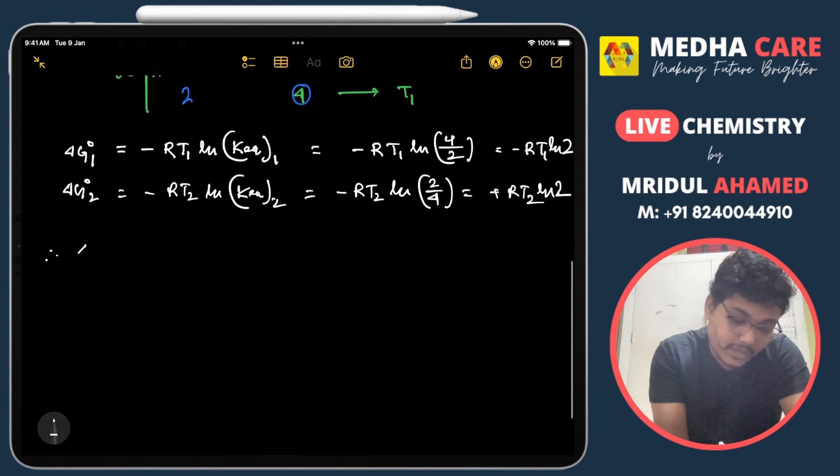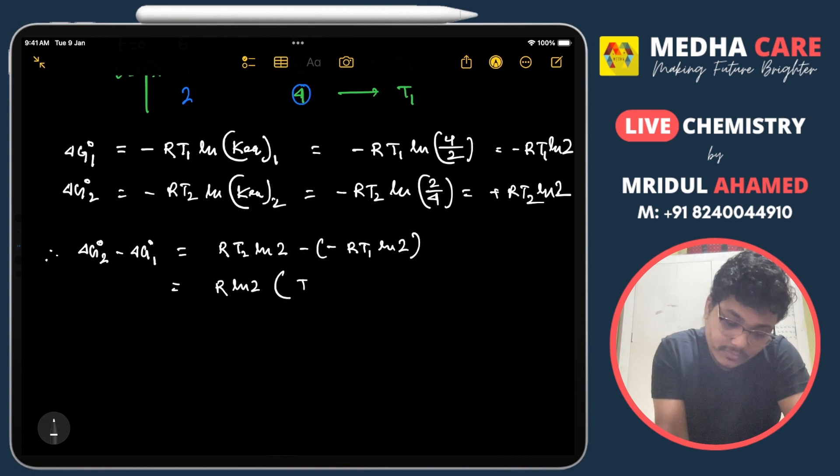Now if we write ΔG°₂ - ΔG°₁, that will be -RT2 ln 2 minus (-RT1 ln 2). So we can write R ln 2 (T2 + T1).